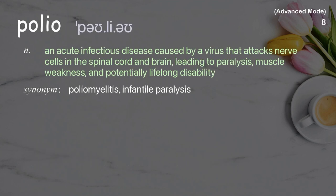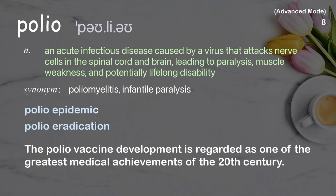Polio: An acute infectious disease caused by a virus that attacks nerve cells in the spinal cord and brain, leading to paralysis, muscle weakness, and potentially lifelong disability. Examples: Polio epidemic. Polio eradication. The polio vaccine development is regarded as one of the greatest medical achievements of the 20th century.